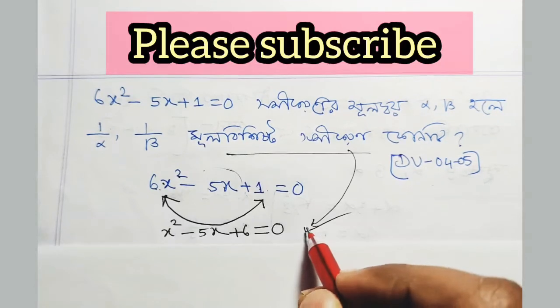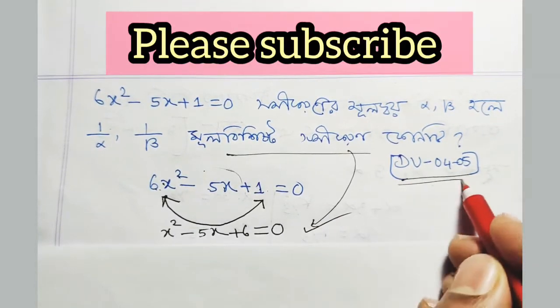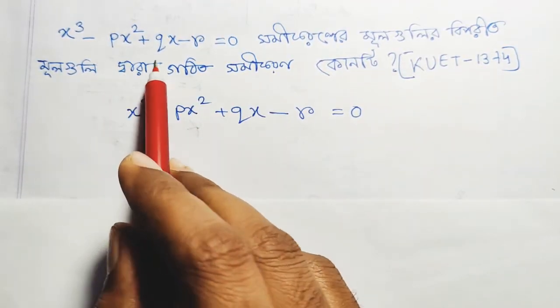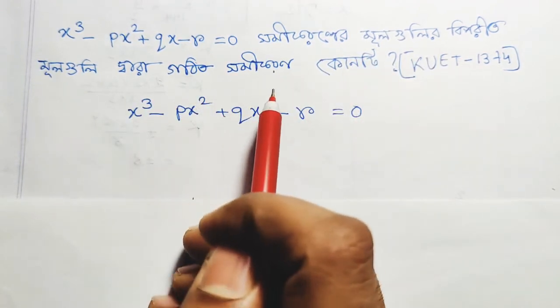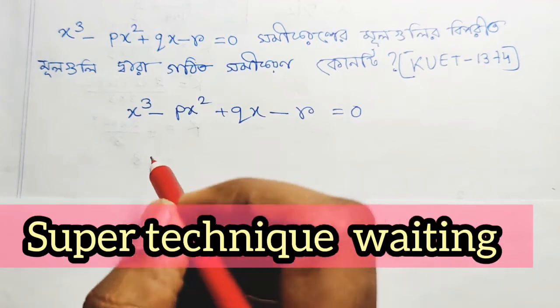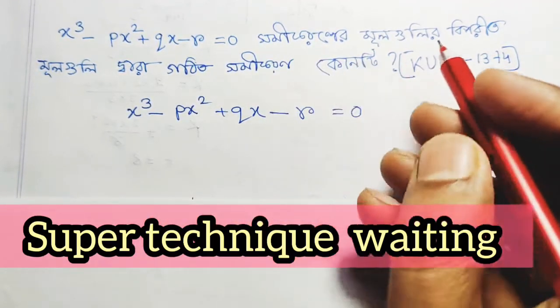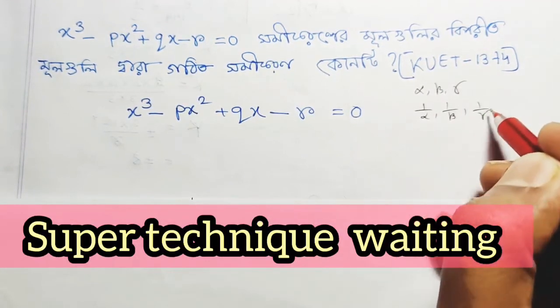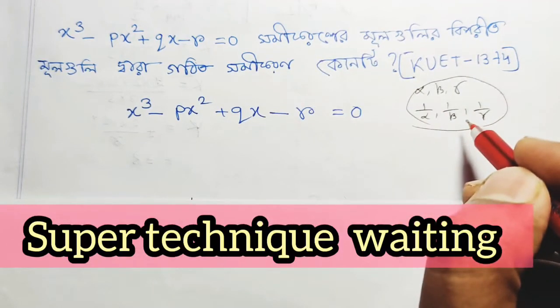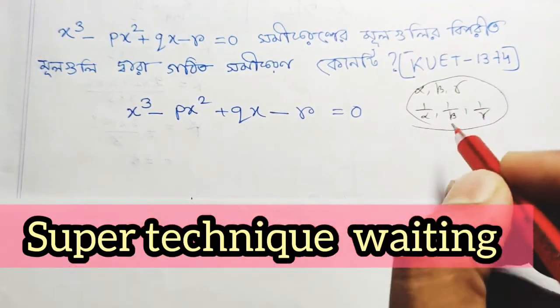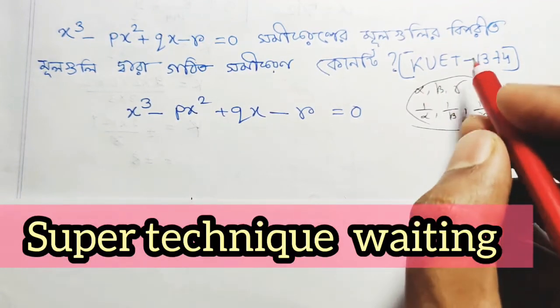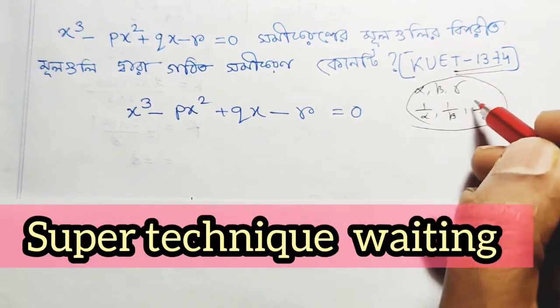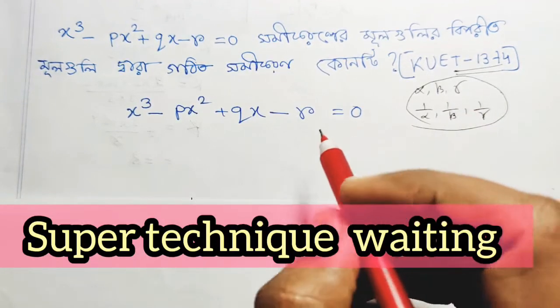There's a shortcut method for university questions. For MCQ-type questions, we can apply these techniques. These methods are especially useful when alpha, beta, and gamma appear together in polynomial equations.